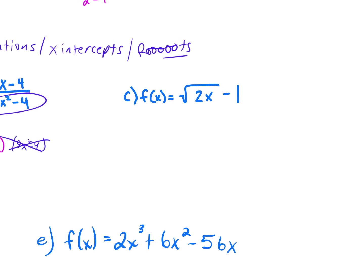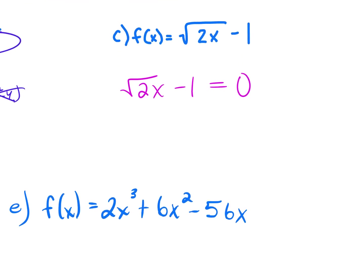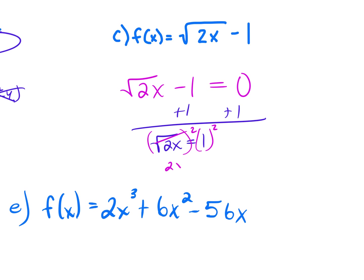Be careful with this question. The 2x is underneath the radical and the minus 1 is on the outside. To solve this, first add the 1 — you've got to get the radical by itself before you start squaring. Now square both sides: 2x equals 1, so x equals one-half. You can check: 2 times one-half is 1, the square root of 1 is 1, and 1 minus 1 is 0 — which is just what we set it equal to.